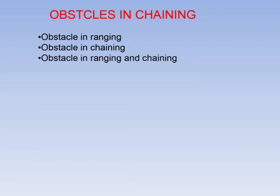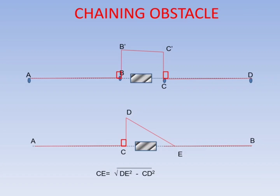Obstacles in chaining and ranging: When obstacles are there in chaining, rectangles are constructed at the obstruction — before and after the obstruction. Perpendicular lines are erected and a rectangle is made so that the BC distance equals B'E'. Alternatively, a right angle triangle is constructed before and after the obstruction.